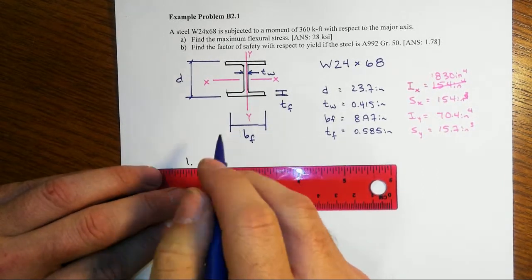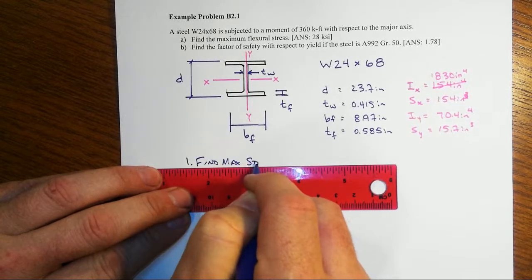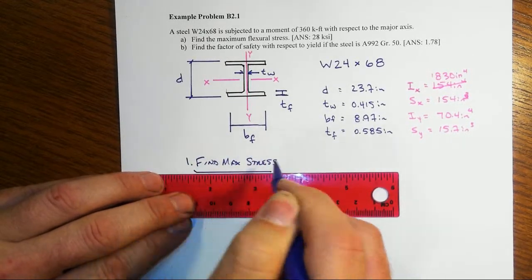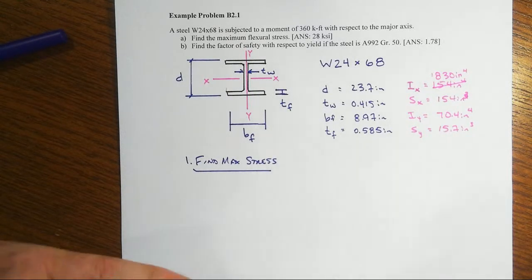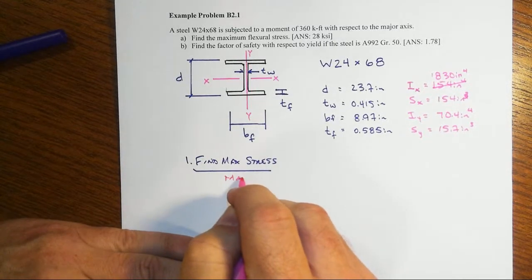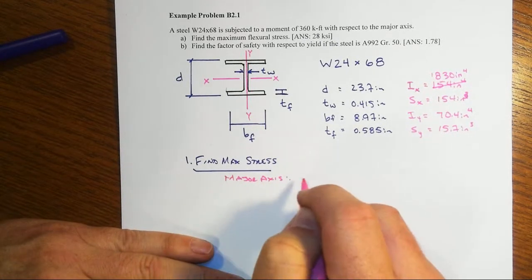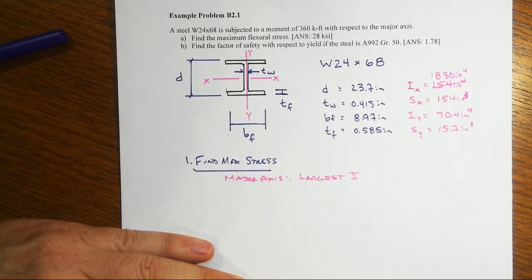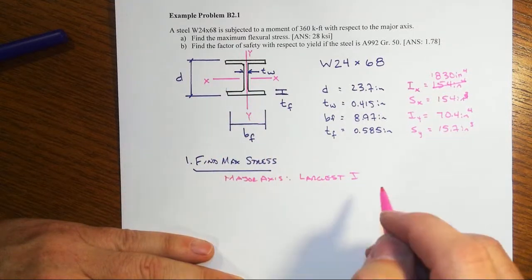For our first step, let's find the max stress. It's about the major axis. The major axis is also known as the strong axis, and it's the one with the largest second moment of area, which in the wide flange shapes is always going to be IX.